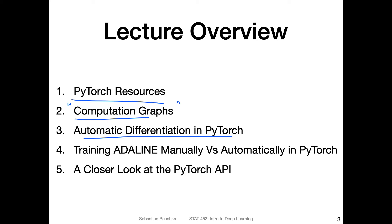We will then see how that applies to Adaline. Last lecture, we trained Adaline manually — we computed the derivatives by hand in the lecture slides, and then I showed you a code implementation. Today, we will see how we can do this automatically using PyTorch. There is the so-called backward function, which can do things automatically that we have done tediously by hand last week.